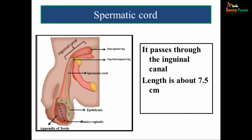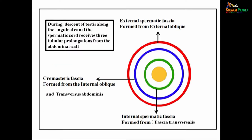The testes develops intra-abdominally. During descent of the testes along the inguinal canal, the spermatic cord also comes down. While coming down, it receives three tubular prolongations from the abdominal wall — these are called the coverings of the spermatic cord. The outermost is the external spermatic fascia, formed from the external oblique aponeurosis. The middle is the cremasteric fascia, derived from the internal oblique and transversus abdominis. The innermost is the internal spermatic fascia, formed from the fascia transversalis.